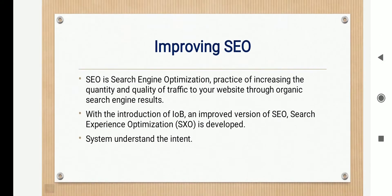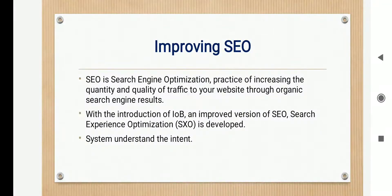The last benefit is improving SEO. SEO is search engine optimization — when we search something in Google, we receive an optimized result. With IOB, SXO — search experience optimization — an improved version of SEO, is introduced. We now started conversing directly with many devices rather than typing. For example, we have Alexa, Siri, etc. Our natural language is being understood by the system, which understands your intent more than just typing letters. That is what improving SEO means.